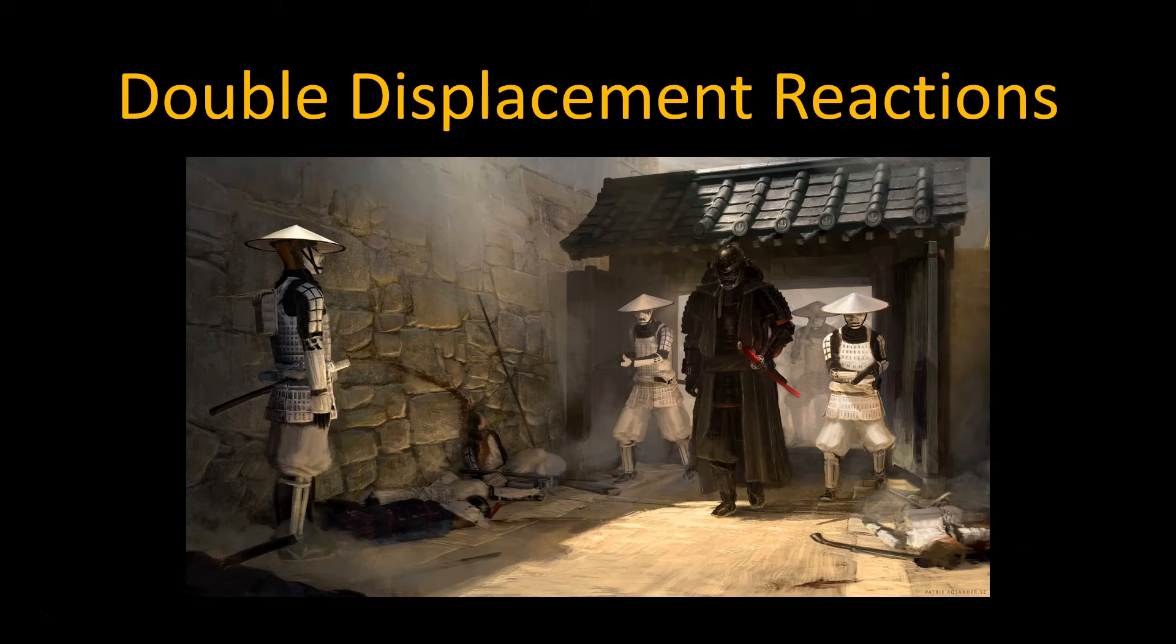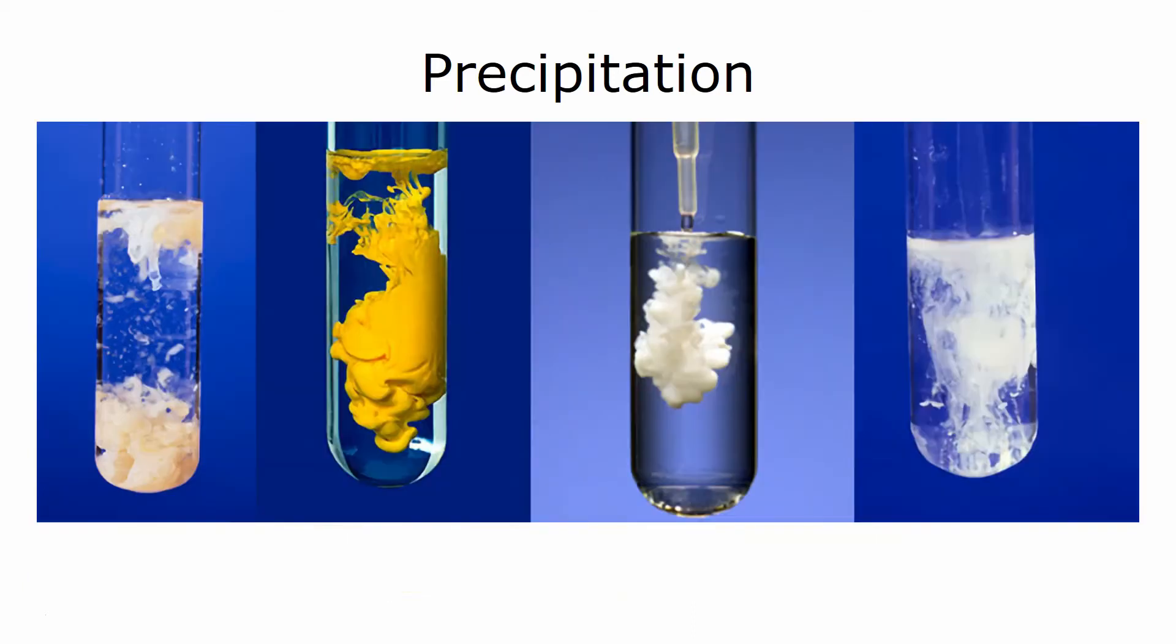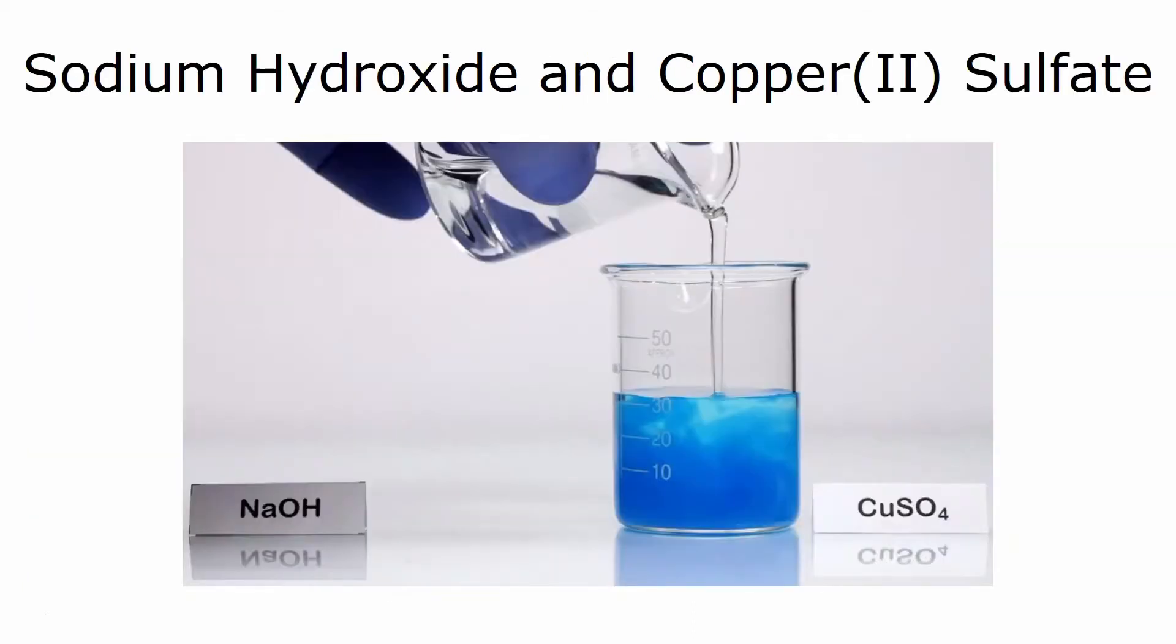In this video, we're going to talk about the double displacement reaction. Double displacement reactions are a class of reactions that usually produce beautiful precipitates. For example, if we mix a solution of sodium hydroxide and copper sulfate, we get a bright blue precipitate in the end.